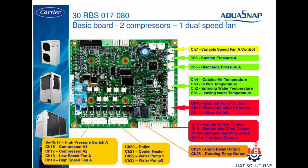Outside air temperature sensor is connected on channel 4. Chilled water supply temperature sensor is connected on channel 3. Entering water temperature sensor is connected on channel 2. Leaving water temperature sensor is connected on channel 1. Dual setpoint contact is on channel 13, and channel 12 is used for demand limit contact.